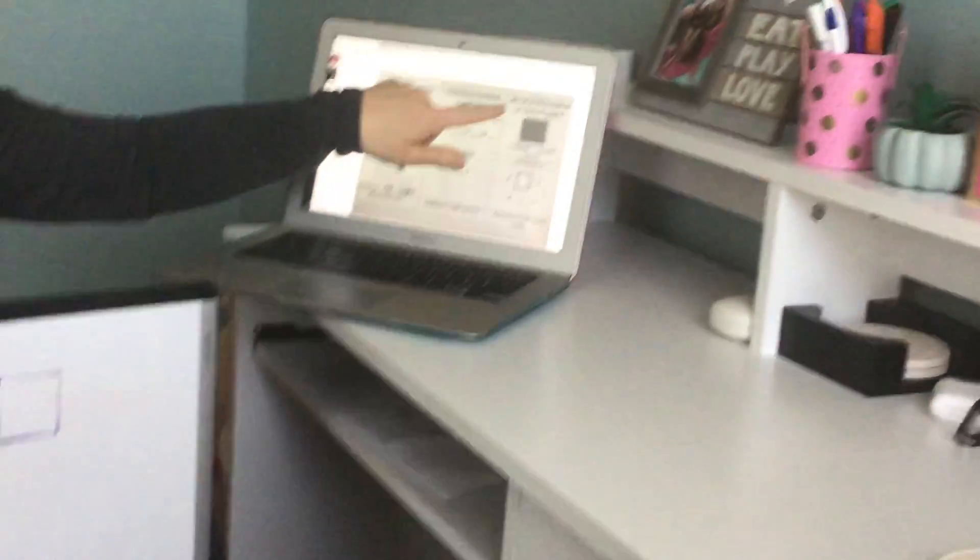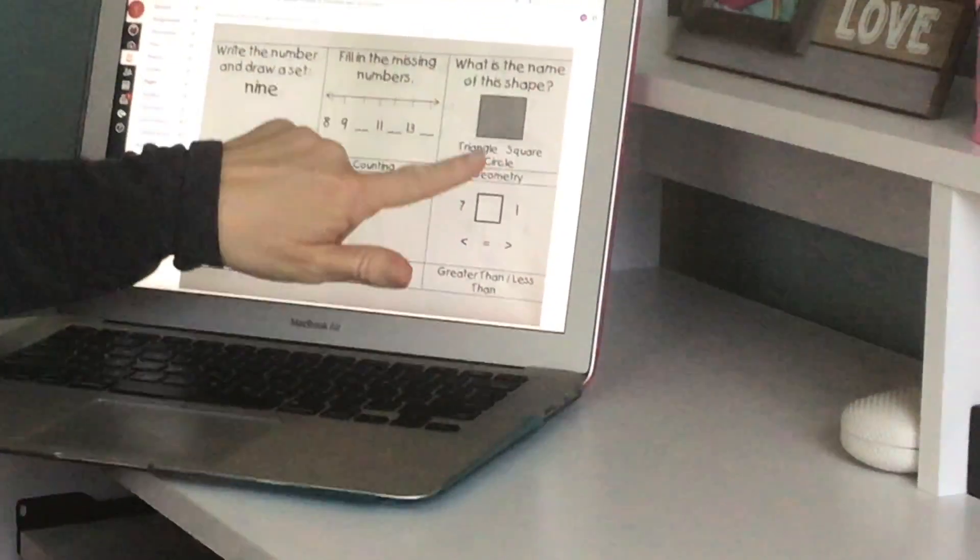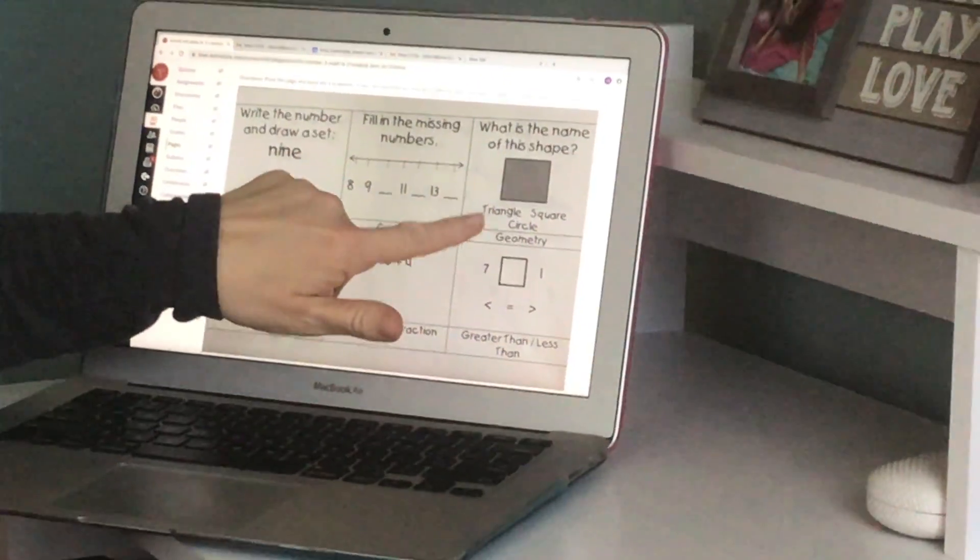We're going to look at this and it says what is the name of this shape and then it has this shape right here. There are three choices so let's talk about the three choices.